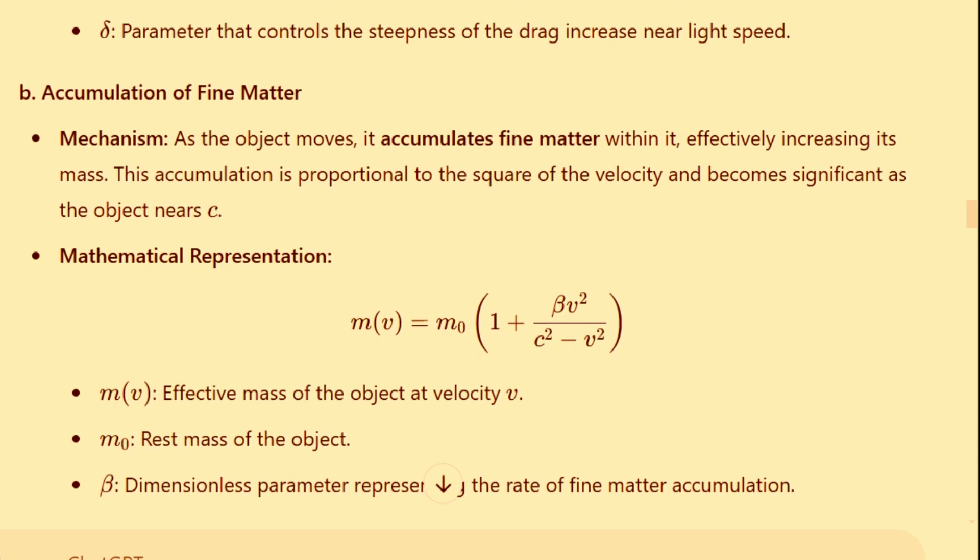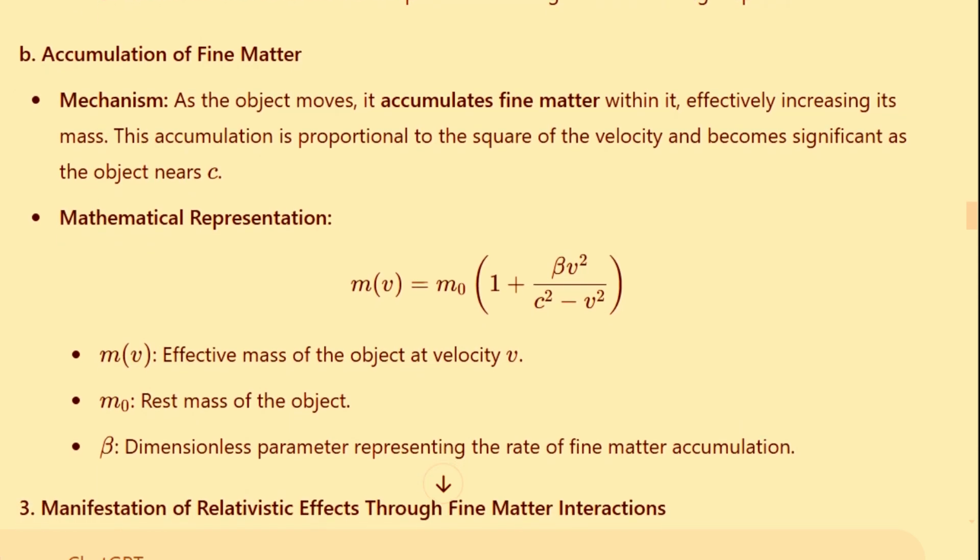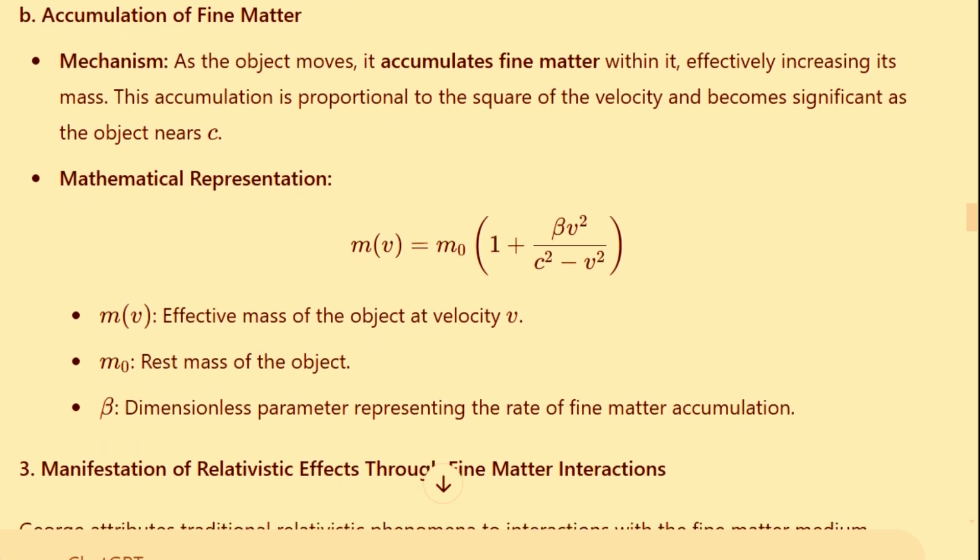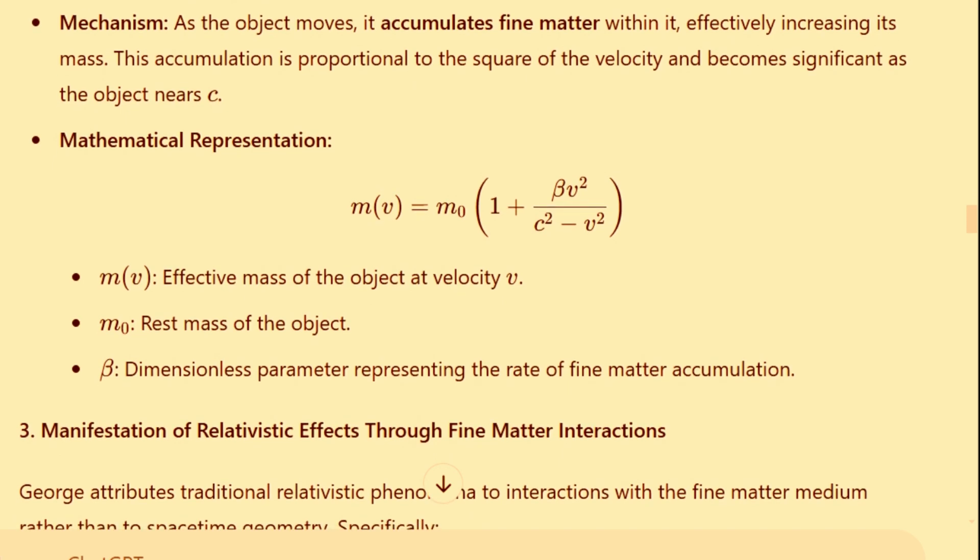B. Accumulation of fine matter. Mechanism: as the object moves, it accumulates fine matter within it, effectively increasing its mass. This accumulation is proportional to the square of the velocity and becomes significant as the object nears the speed of light.